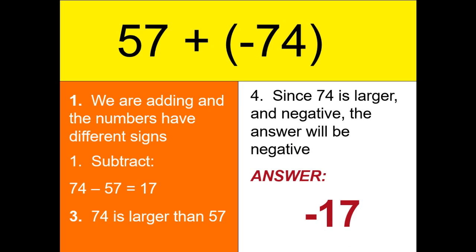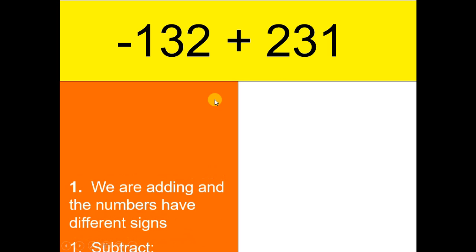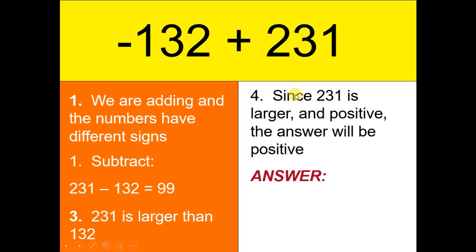Let us continue: negative 132 plus 231. Since they have different signs, we will subtract them: 231 minus 132, which gives us 99. The bigger number here is 231 and it is positive. Therefore, our final answer is positive 99.